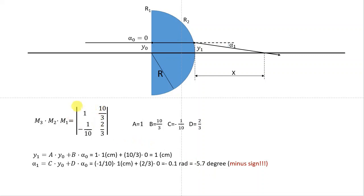Using this matrix, we need to find the height and angle of the output ray for a ray entering 1 centimeter above the optical axis. Alpha 0 is 0 because the ray enters parallel to the optical axis. On the last surface the ray refracts, so alpha 1 is not zero. Since the ray enters perpendicular to the first surface (normal incidence), y1 equals y0 — the direction of the beam does not change at entry.